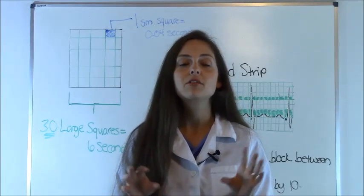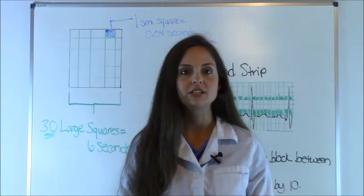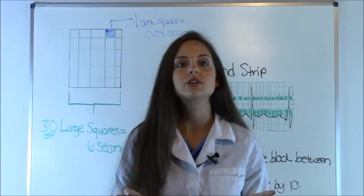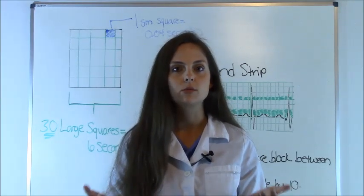But in this video, I'm going to give you a quick tutorial on how to use the 6 second rule in counting a heart rate on an EKG. There are various techniques you can use, but I find that the 6 second rule is the easiest, especially if your rhythm is irregular.